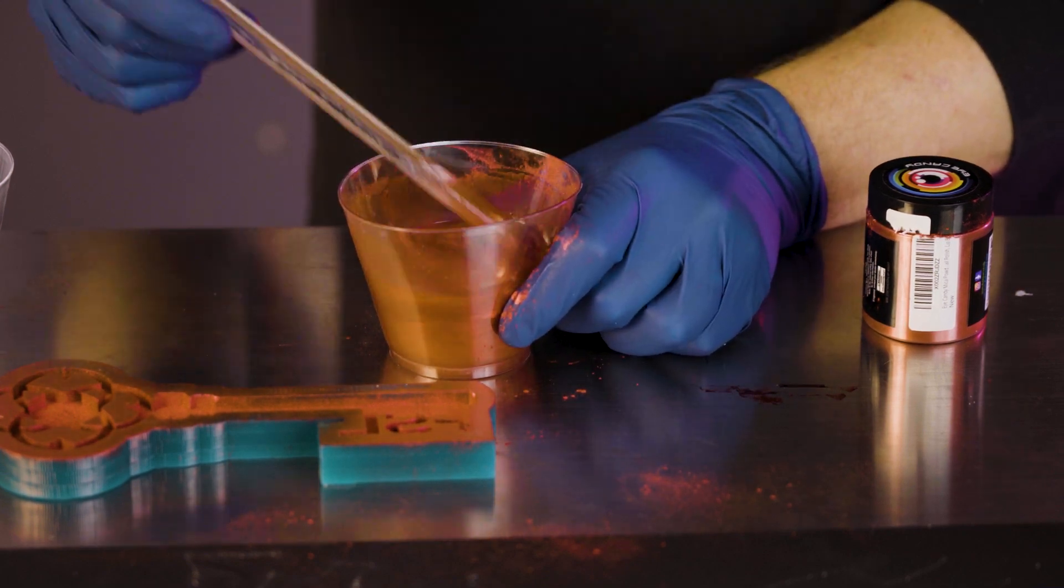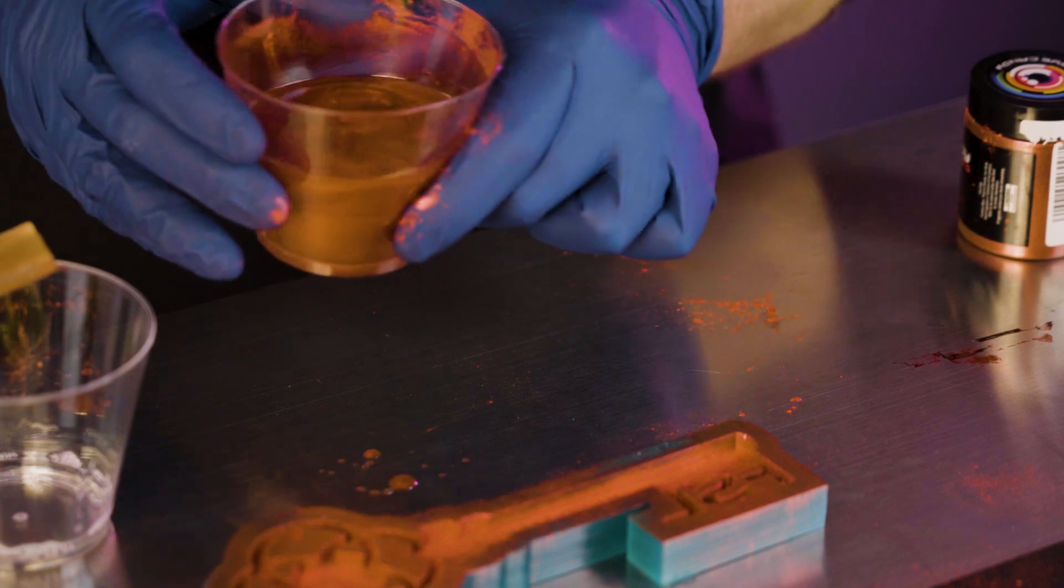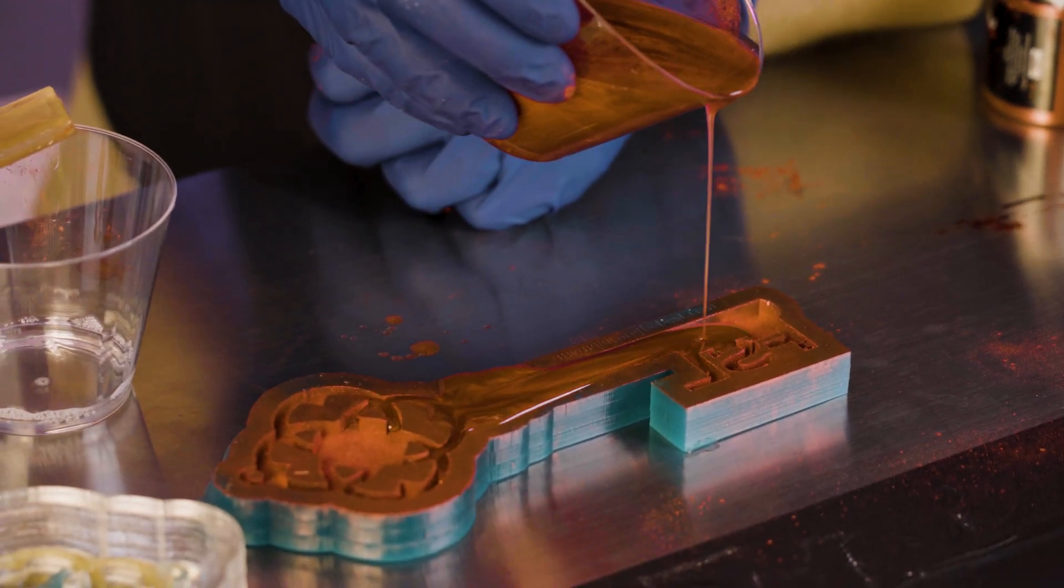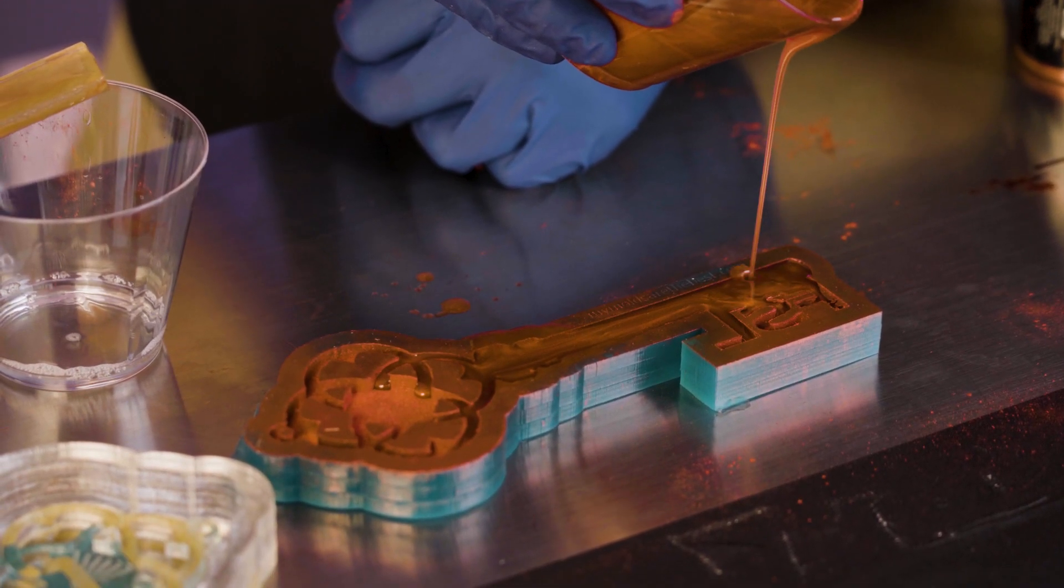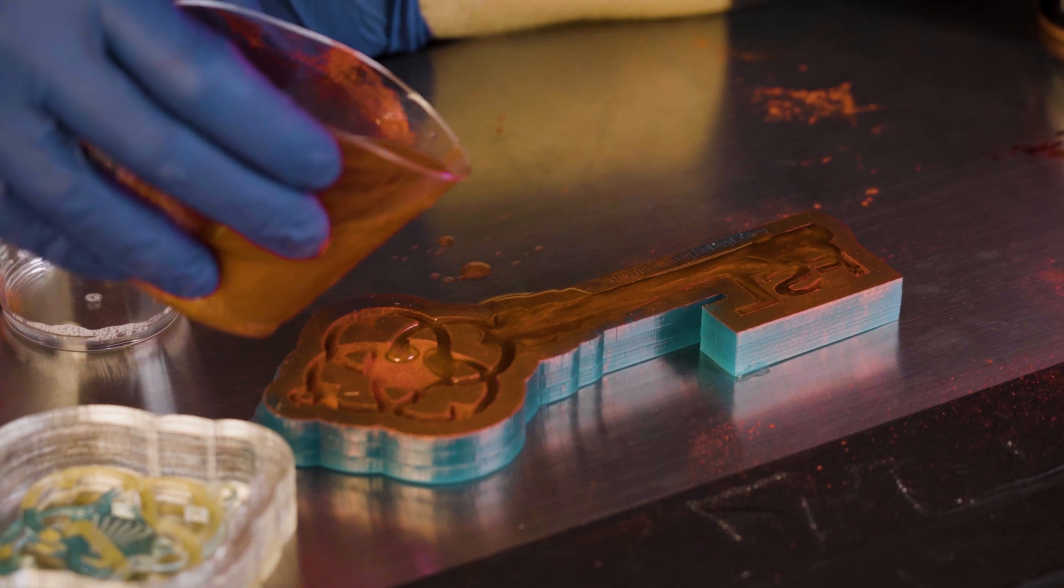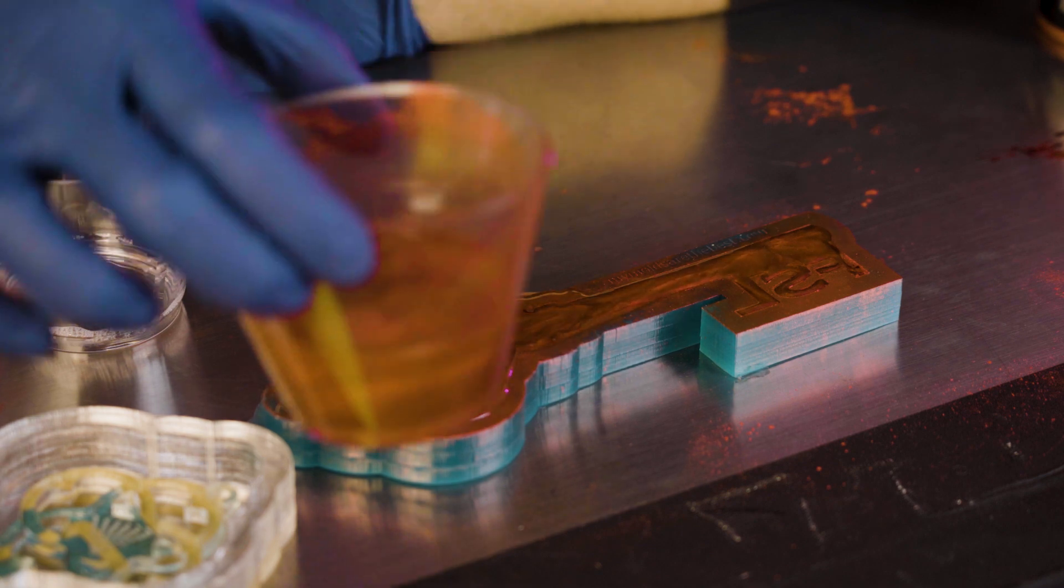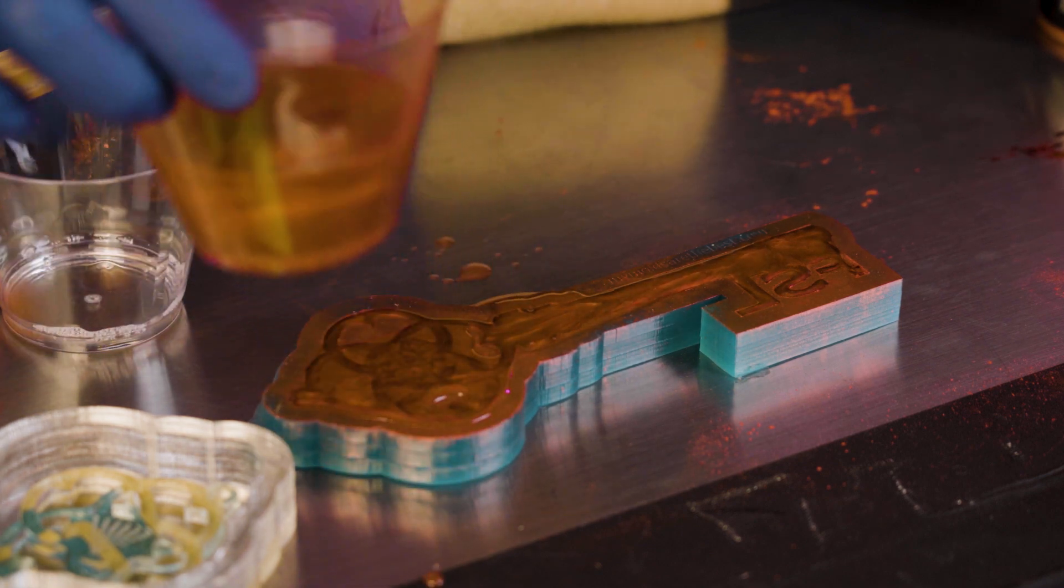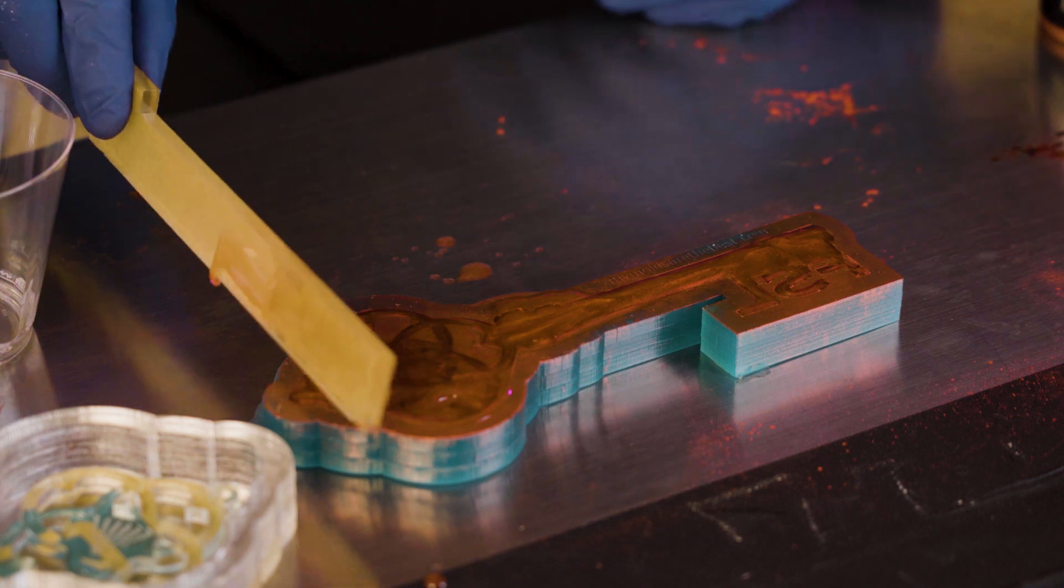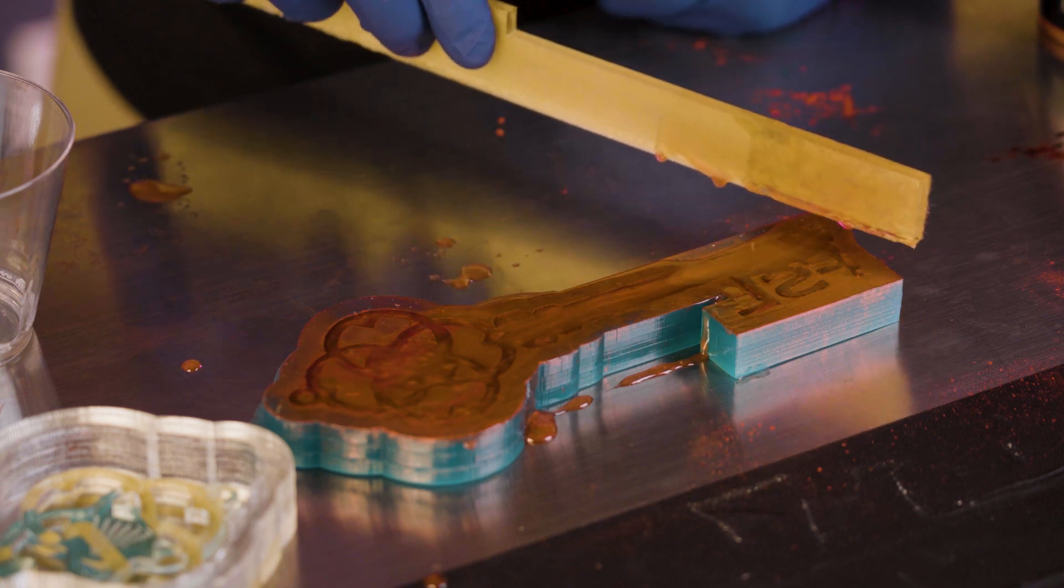Once it gets hot enough we're going to pour our resin into our mold. Let it seep into all the holes. If it overflows a little bit that's fine. You can see I mixed probably enough to make three or four of these keys. You don't want it bubbling up too much at the back so we're just going to scrape this guy across the top.